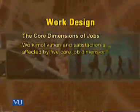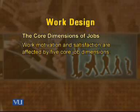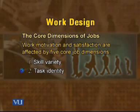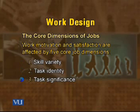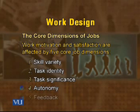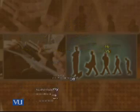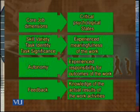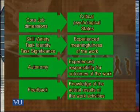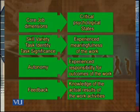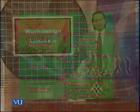Work motivation and satisfaction are affected by five core dimensions. These are: skill variety, task identity, task significance, autonomy, and feedback. On the screen you can see these five core dimensions on the left-hand side. These five core dimensions affect three critical psychological states. Skill variety, task identity, and task significance collectively give meaningfulness to the job.